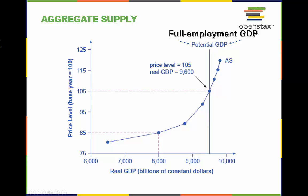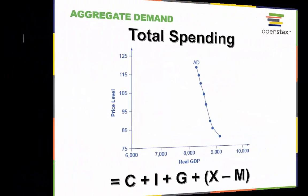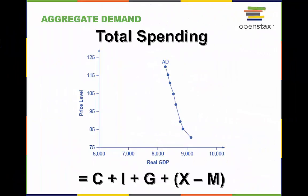One important note is that this graph shows the supply based on price level of the final product and does not show the impact that the inputs of production may have on supply. Aggregate demand, or AD, slopes downward, showing that as the price level rises, the amount of total spending on domestic goods and services declines.